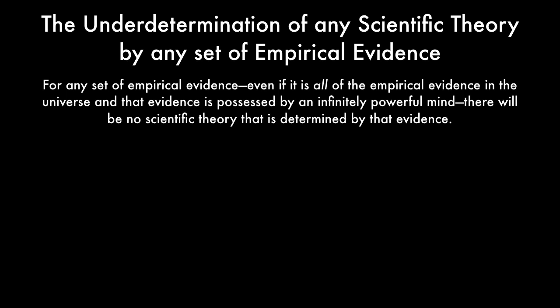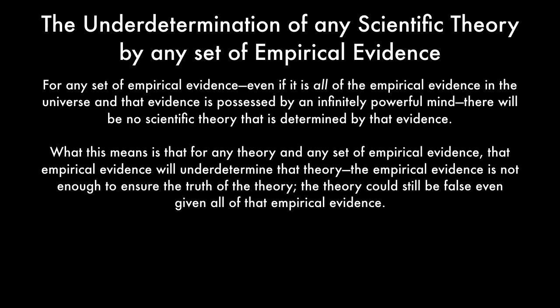For any set of empirical evidence — even if it's all of the empirical evidence in the universe, possessed by an infinitely powerful mind — there will be no scientific theory that is uniquely determined by that evidence. What this means is that for any theory and any set of empirical evidence, that empirical evidence will under-determine that theory. The empirical evidence is not enough to ensure the truth of that theory alone; the theory could still be false given all of that empirical evidence.